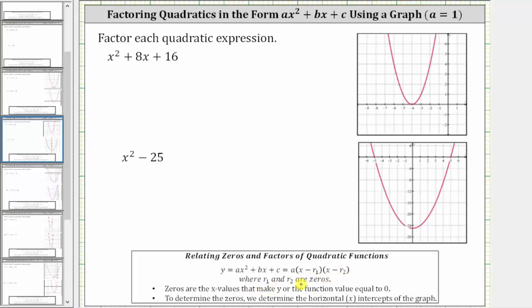Here r sub one and r sub two are the zeros. The zeros are the x values that make y, or the function value, equal to zero, and therefore we determine the zeros by determining the horizontal intercepts, or x-intercepts, of the graph.